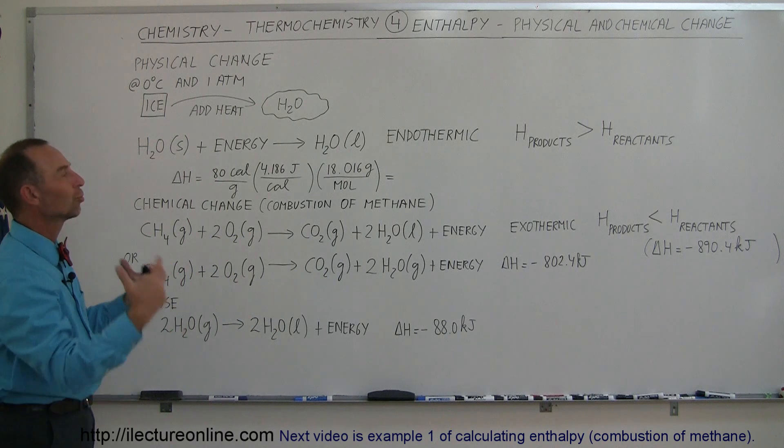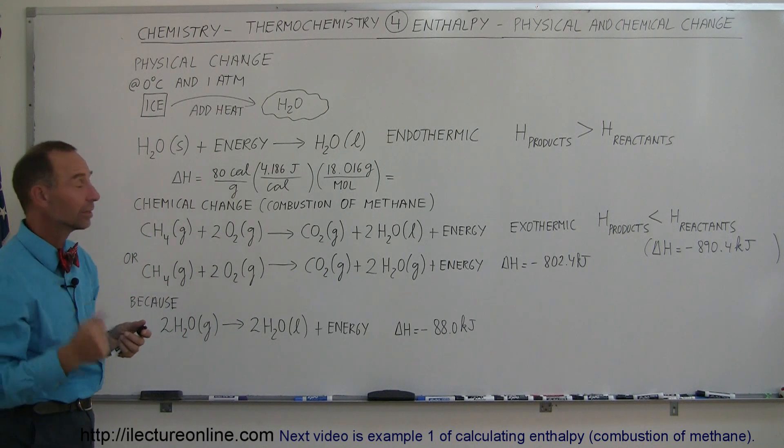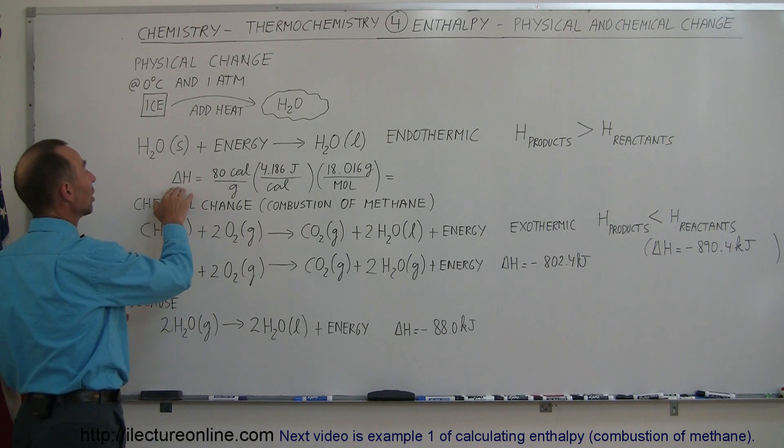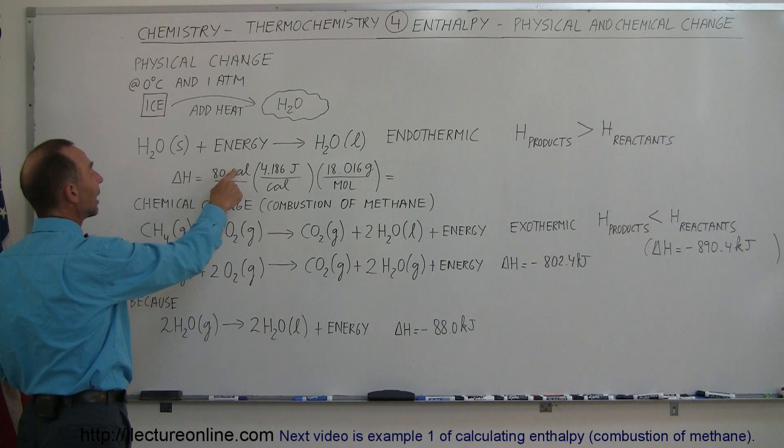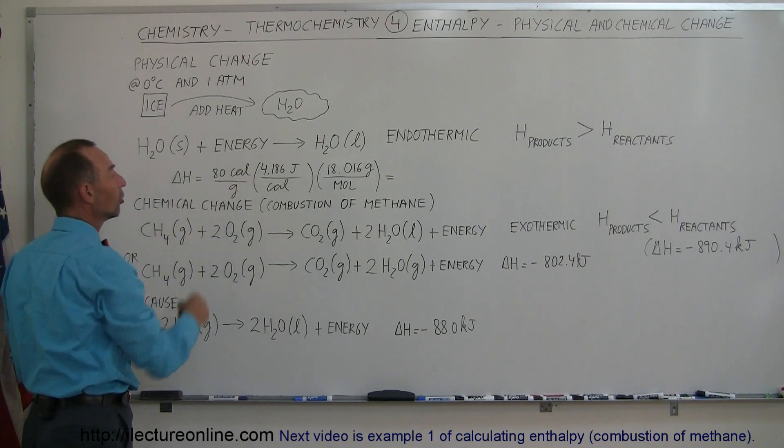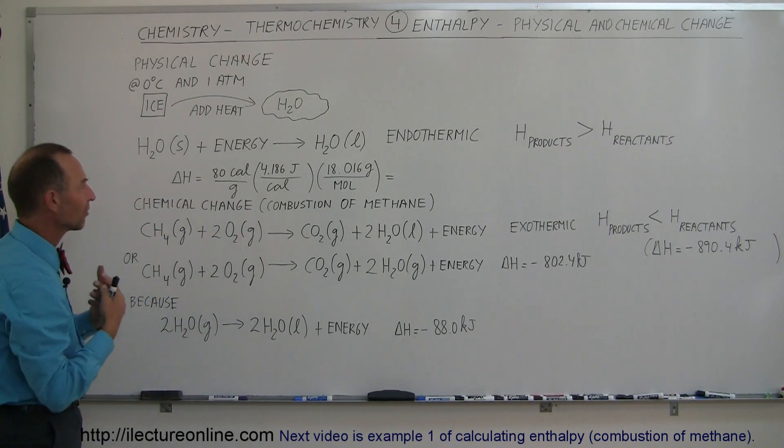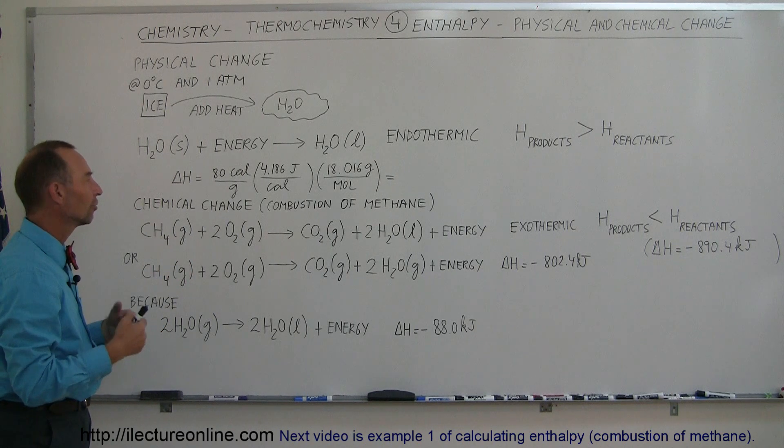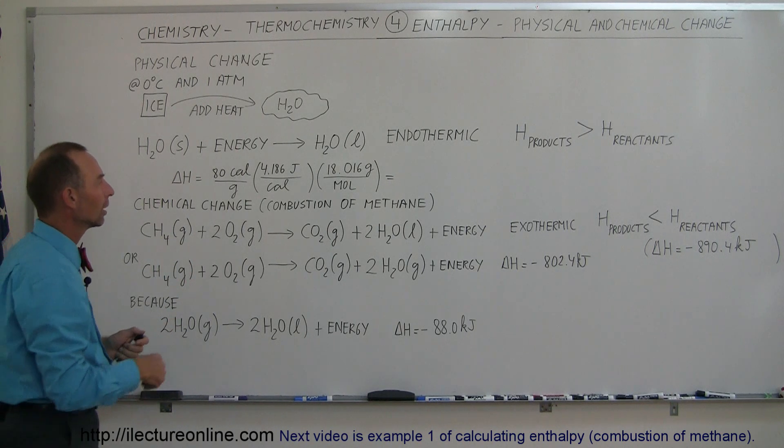How much energy has been absorbed to make that happen? Well, to calculate that, that would be the change in enthalpy, and that would be 80 calories per gram. This is called the latent heat of fusion. That's the amount of heat you have to add to ice for ice to melt into liquid.